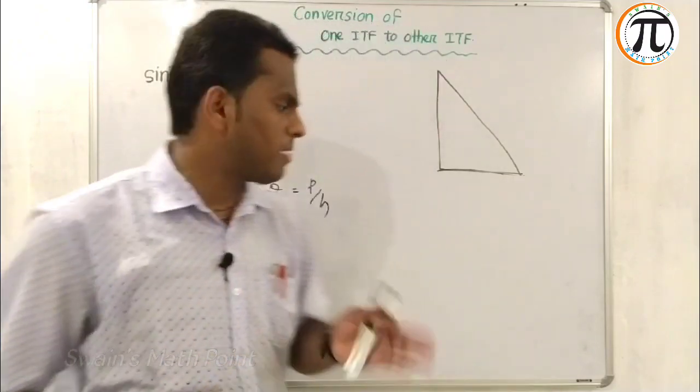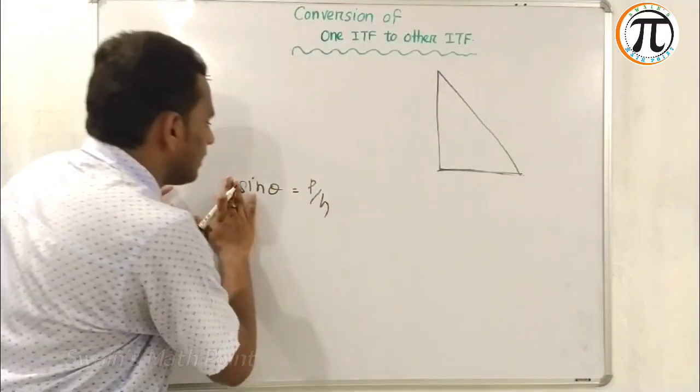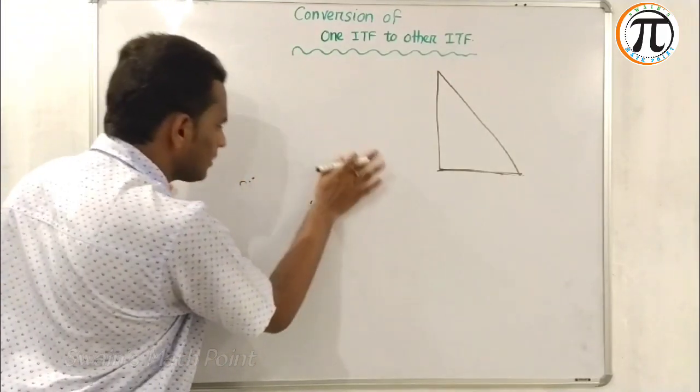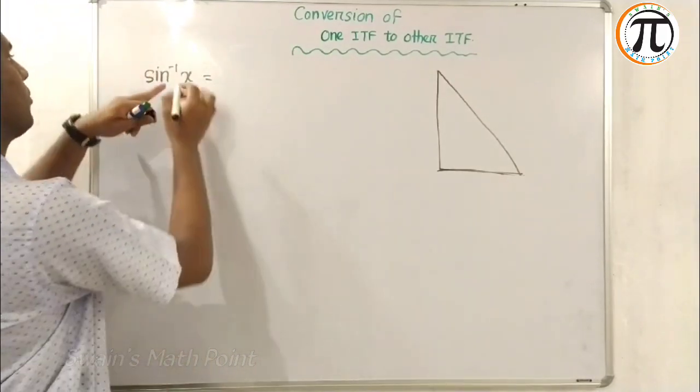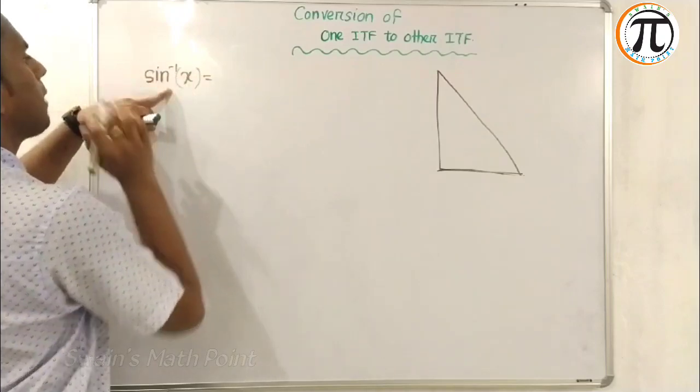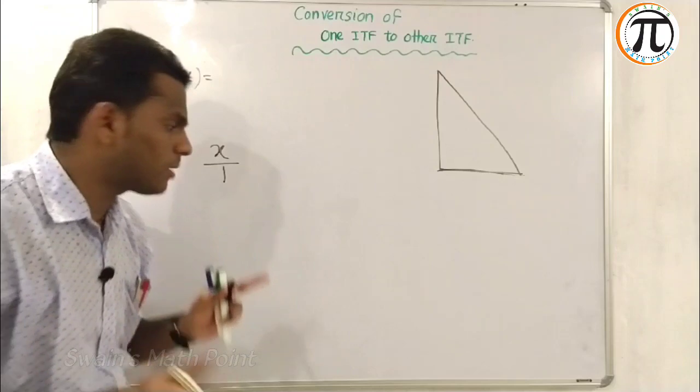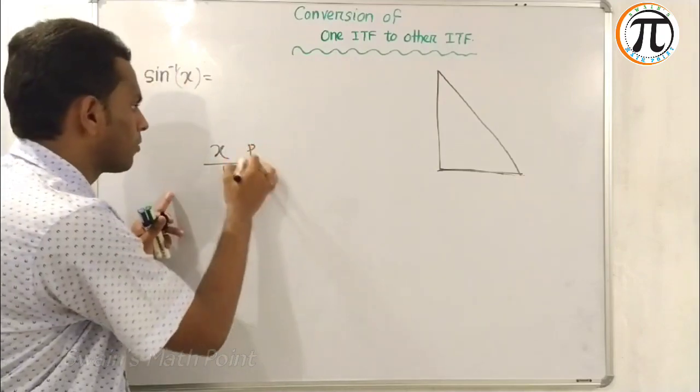For sine inverse X, we can say X equals sine theta, which means X by 1. Simply X by 1, so P equals X and H equals 1.